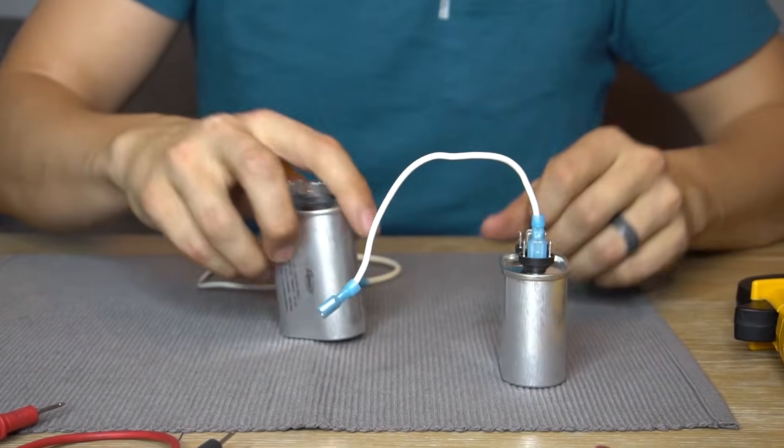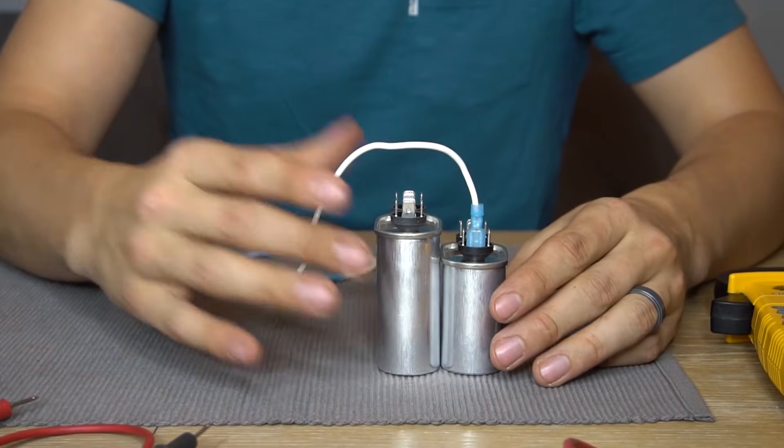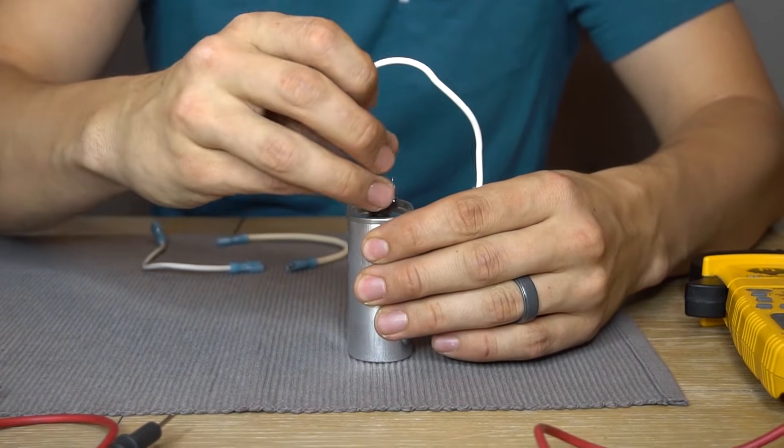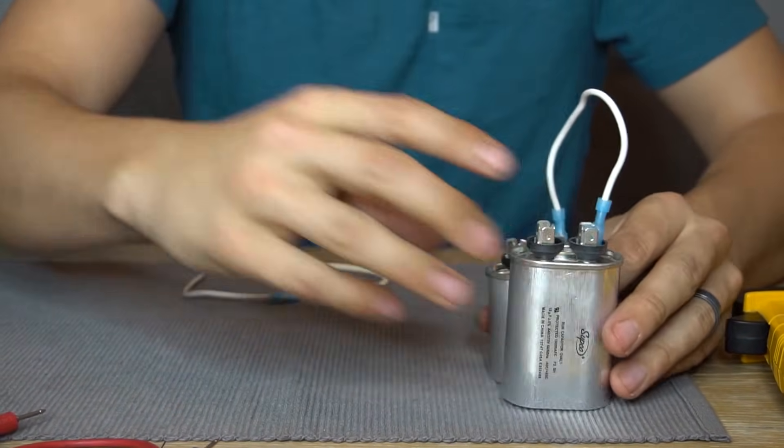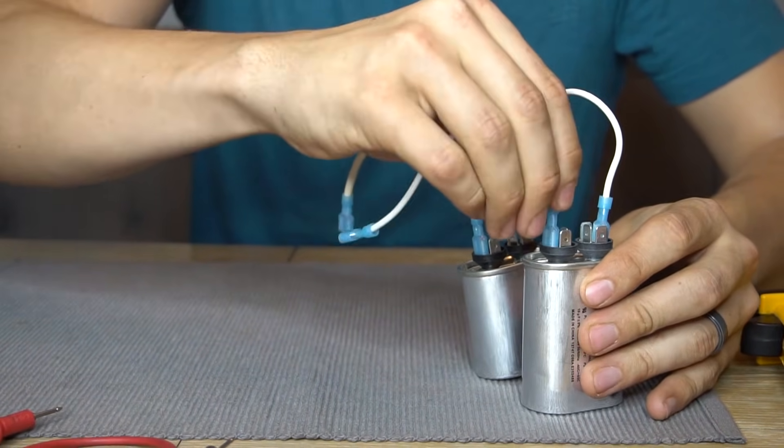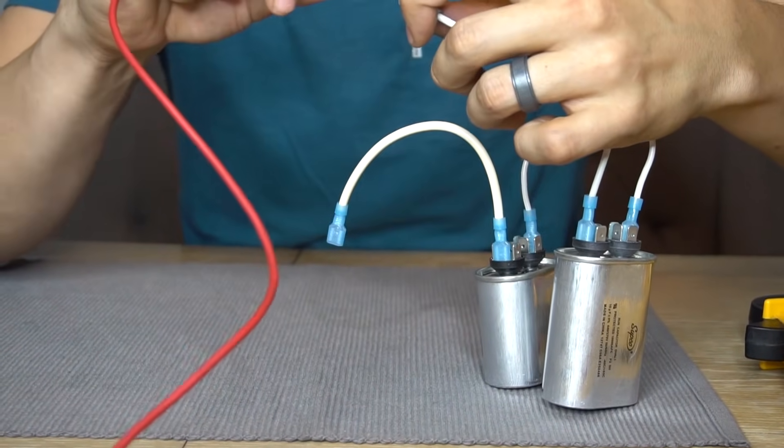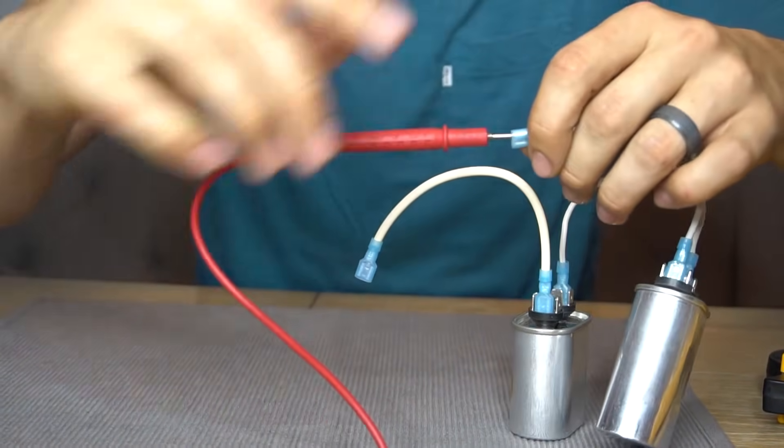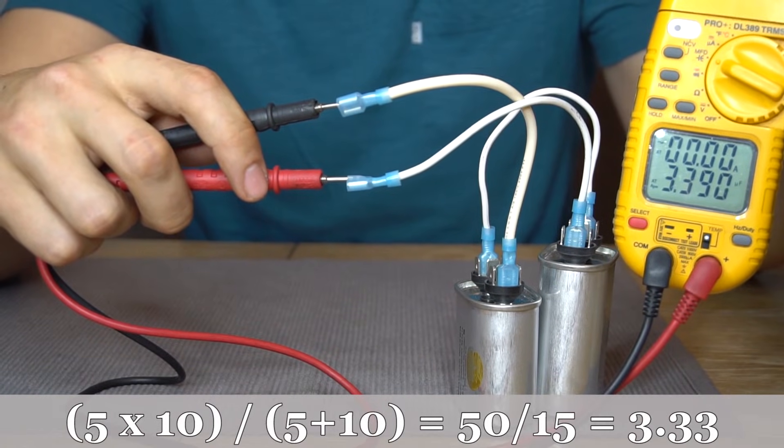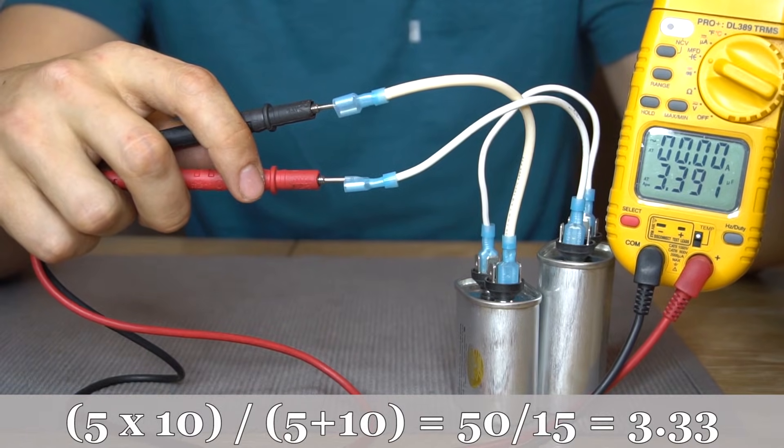And to prove that, let's just do one last example. Let's combine a 5 microfarad with a 10 microfarad, which will give us 15 total. So if we go by the logic of it being half, it should be 7.5, right? But that's not true because you have to use that little magical formula to get the end result. Let's see what we will get with a 5 and a 10 wired up in series. And as you can see, with this combination, we're actually getting about 3.4 microfarads, which goes by that formula.